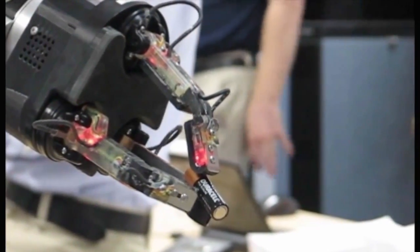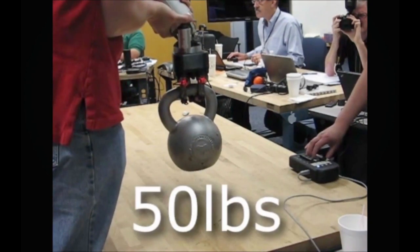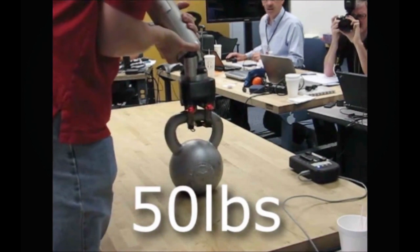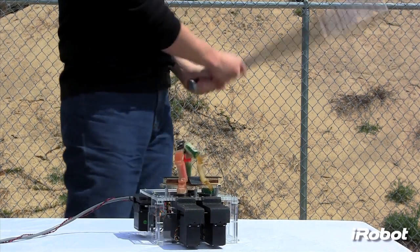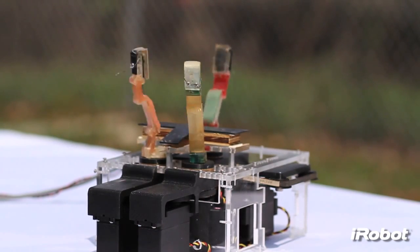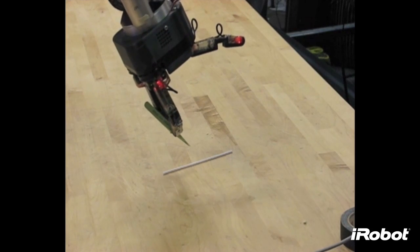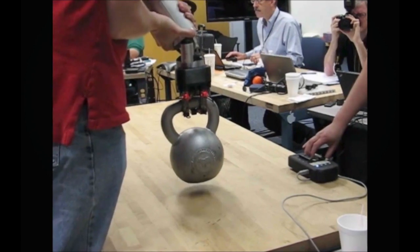This robot hand can do almost anything. Meet the iHi hand, a new robotic hand that can grip everything from a pair of tweezers to a 50-pound kettlebell.